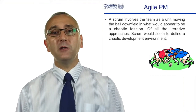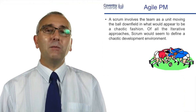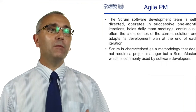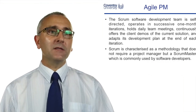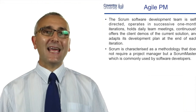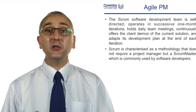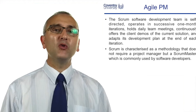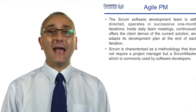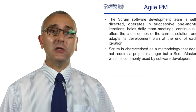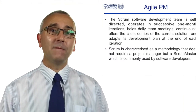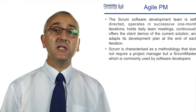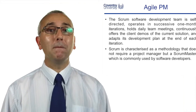We might hold daily meetings called scrums. Despite the rugby association suggesting chaos, a scrum really means the team holds daily meetings to surface issues and set priorities for the coming day — like a typical round-the-boss's-desk meeting at 8:15 every morning: what are our priorities, and what do we need to do before Friday's showcase? These scrums are sometimes chaired by someone called a scrum master.